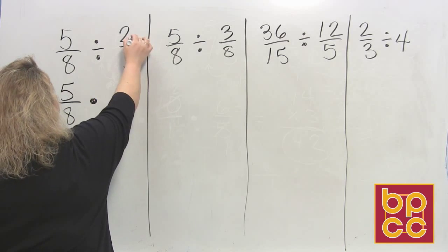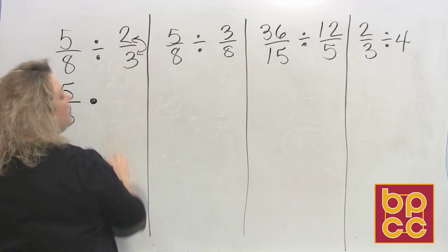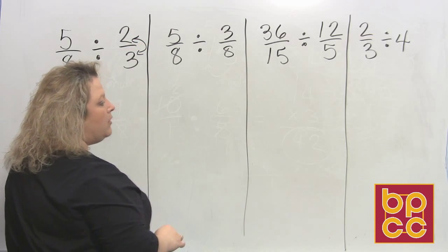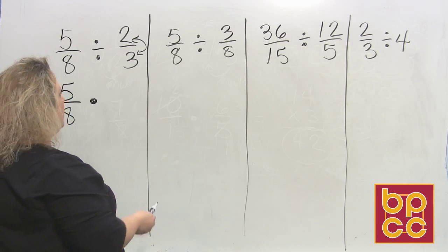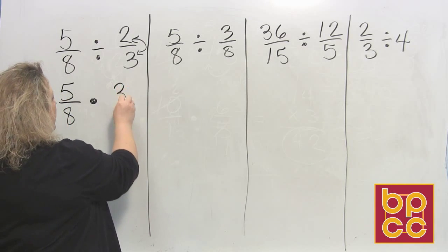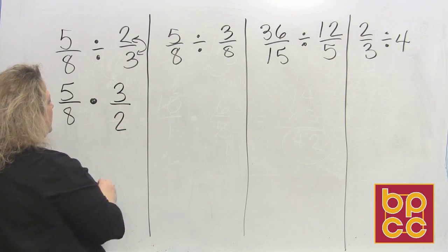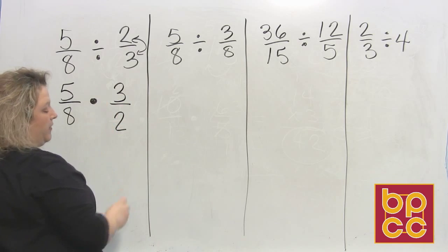So it didn't say I do anything to the first fraction, so I'm going to leave it that way. We flip the second and when you flip it, that's the word reciprocal. The word reciprocal means to take whatever the fraction is and flip it over. So when I flip it, it becomes 3 over 2 and multiply. So change divide to multiplication.